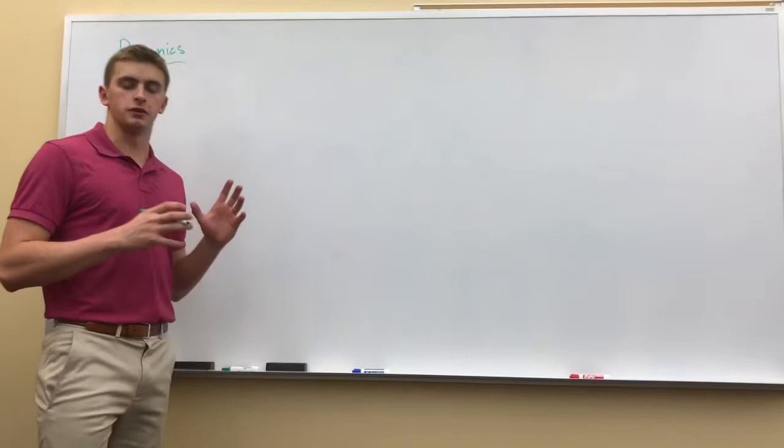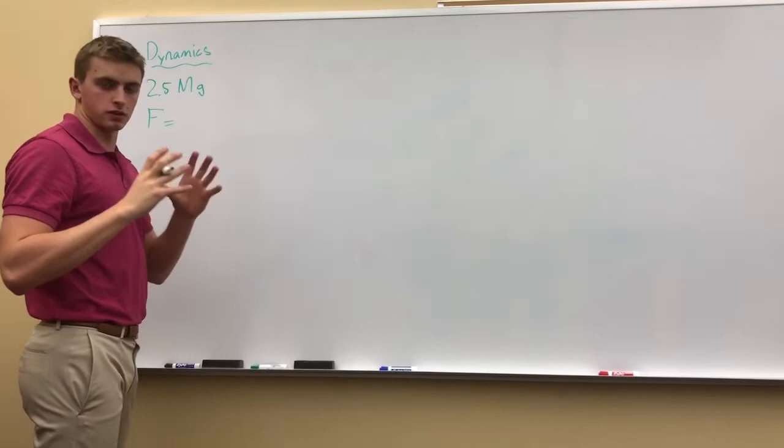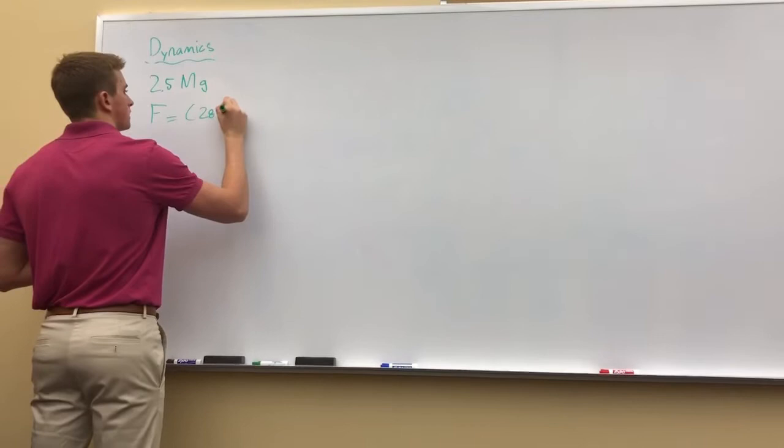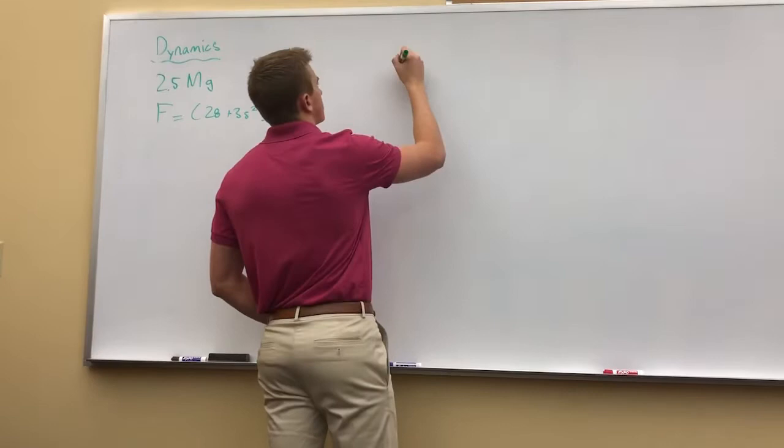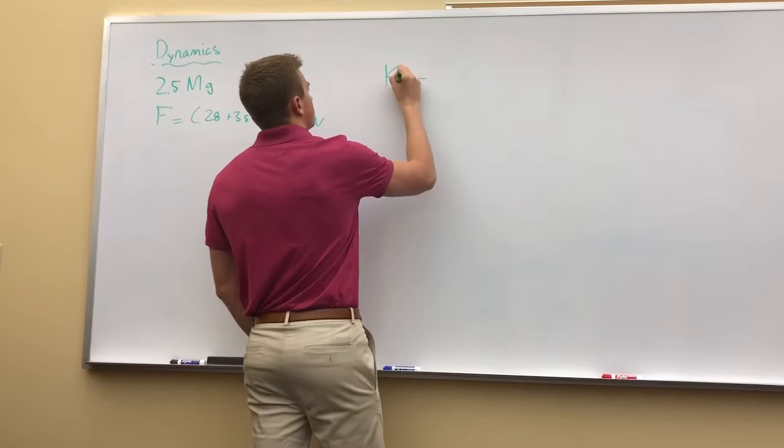So we have a crane. It's going to lift a 2.5 megagram with a big M beam. And it's going to do so with a force. Mind you, it's a function, it's a variable force. A force of 28 plus 3s squared times 10 to the third newtons. We know that K1 minus U1 minus 2 is equal to K2.